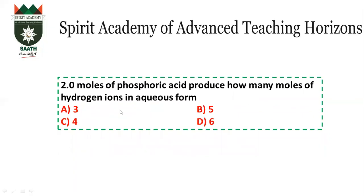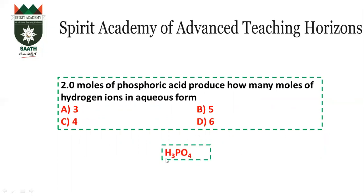Next question: 2 moles of phosphoric acid produce how many moles of hydrogen ions? Phosphoric acid formula is H₃PO₄, meaning 1 mole gives 3 hydrogen ions. But we have 2 moles, so 2 moles means 6 hydrogen ions. The answer will be D.